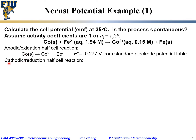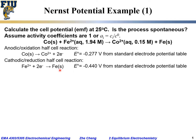On the other hand, for the cathodic or reduction half-cell reaction — obtaining electrons — the half-cell reaction would be iron 2+ combined with 2 electrons to form iron metal. Similarly, from the standard electrode potential table, the E0 would be minus 0.440 volts.